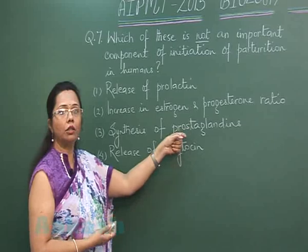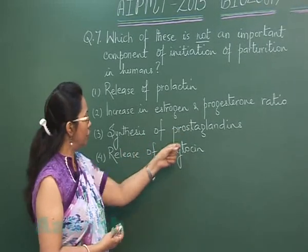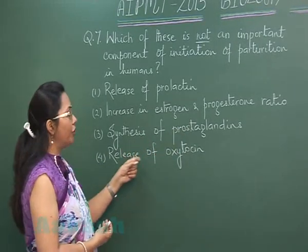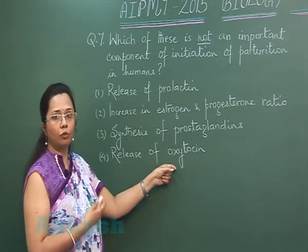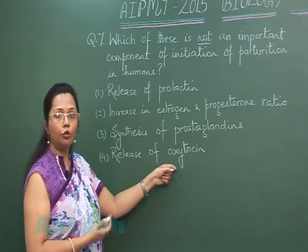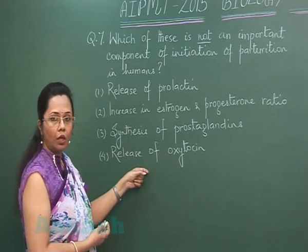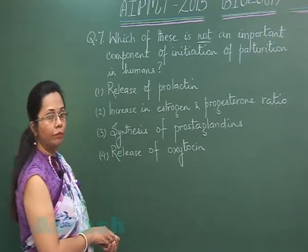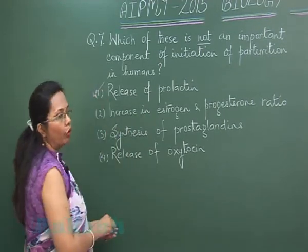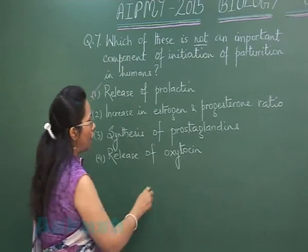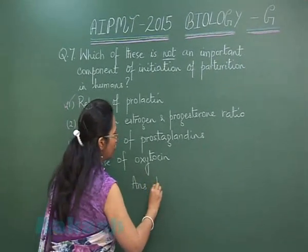Release of oxytocin from the maternal pituitary is responsible for uterine contractions. So these three factors do occur during parturition, but not the release of prolactin. So the answer is 1.